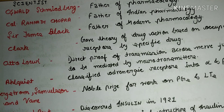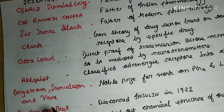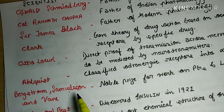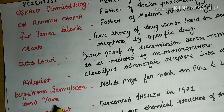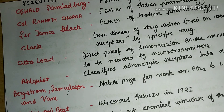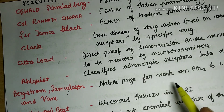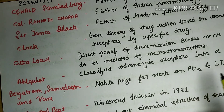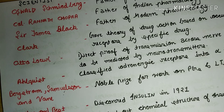The next scientists are Bergstrom, Samuelsson, and Vane. They won the Nobel Prize for their work on prostaglandins and leukotrienes. Now let me explain what prostaglandins and leukotrienes actually are and how they are generated.